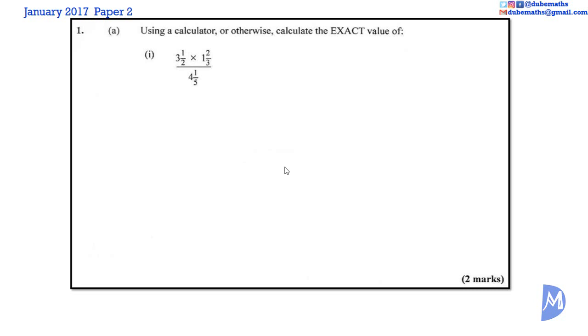Let us work out the fractions without using a calculator. With a fraction, we work out the numerator first and then the denominator. So let's work out 3 and a half multiplied by 1 and 2 thirds.